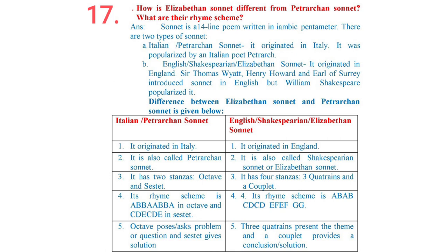Question 17: How is the Elizabethan sonnet different from the Petrarchan sonnet? What are their rhyme schemes? Answer: A sonnet is a 14-line poem written in iambic pentameter. There are two types: A. Italian or Petrarchan sonnet — it originated in Italy and was popularized by the Italian poet Petrarch. B. English or Shakespearean or Elizabethan sonnet — it originated in England. Sir Thomas Wyatt, Henry Howard and Earl of Surrey introduced the sonnet in English, but William Shakespeare popularized it.